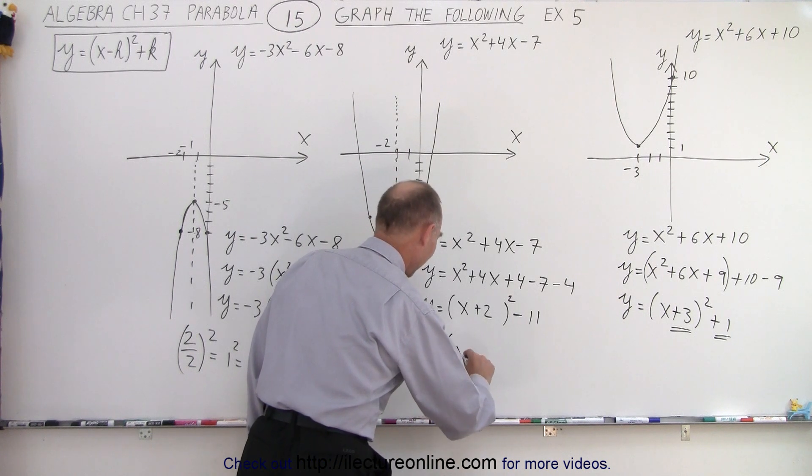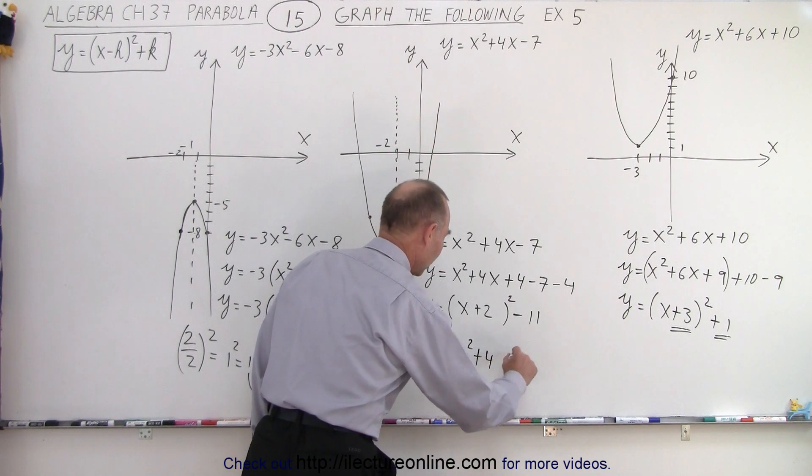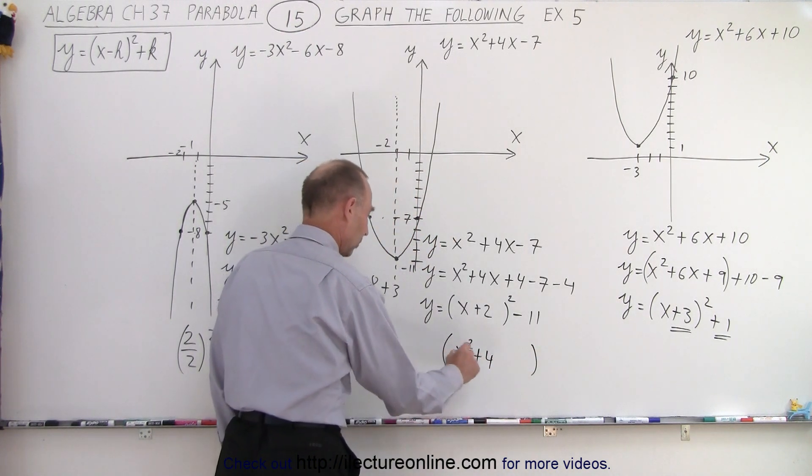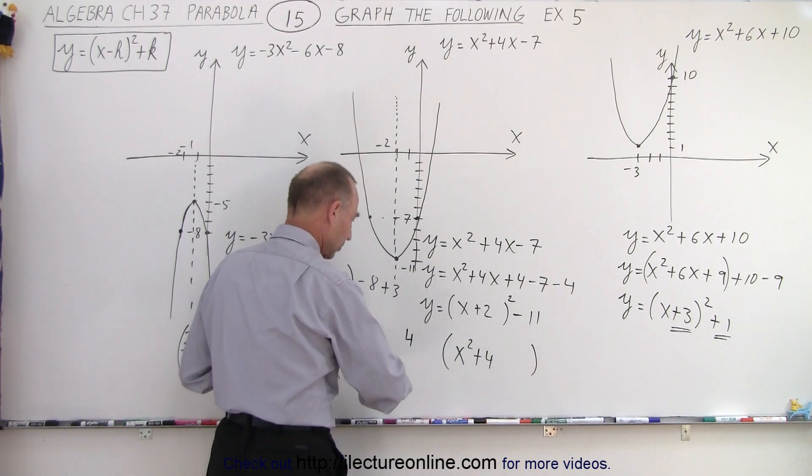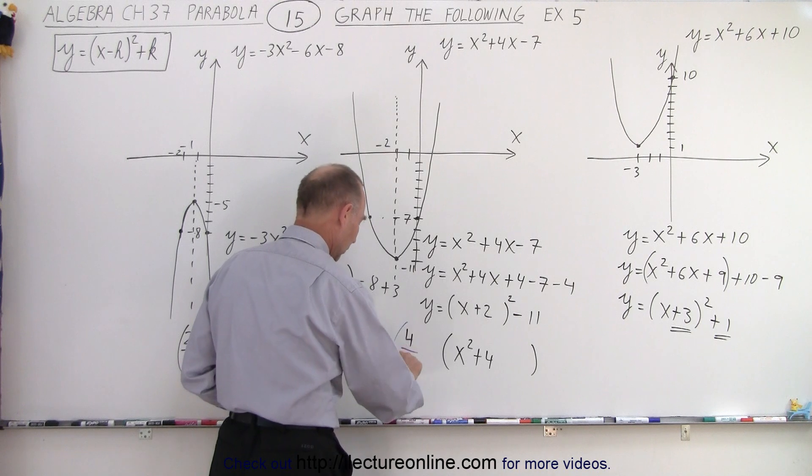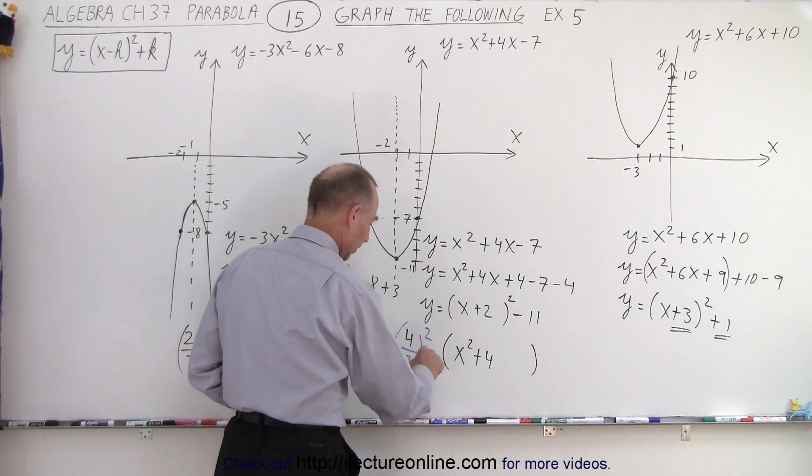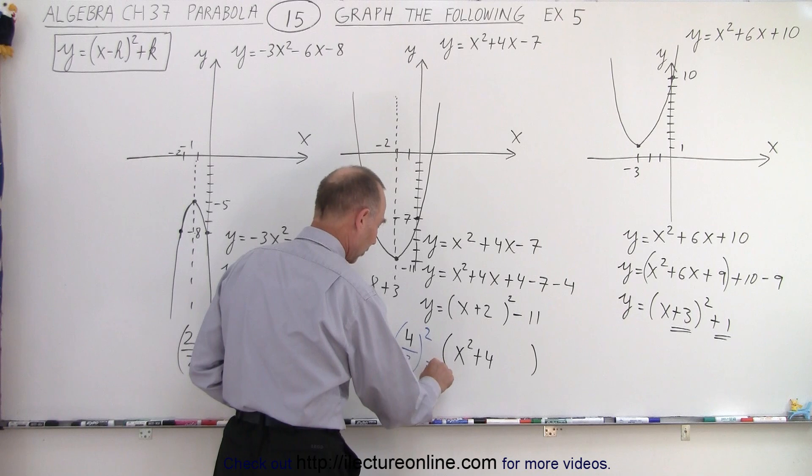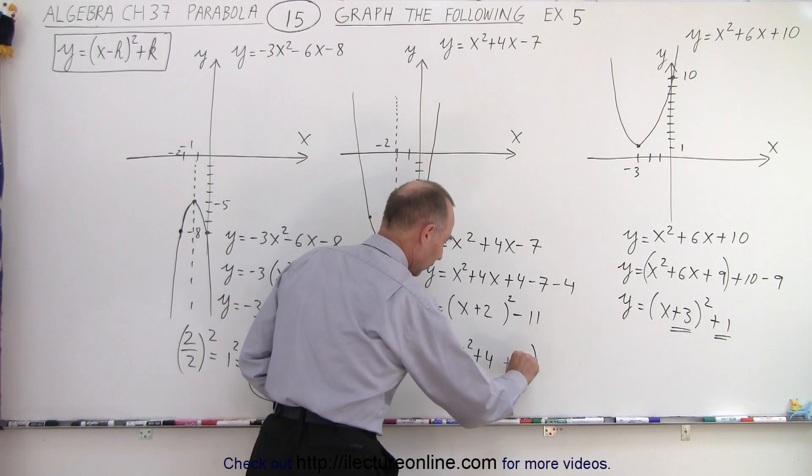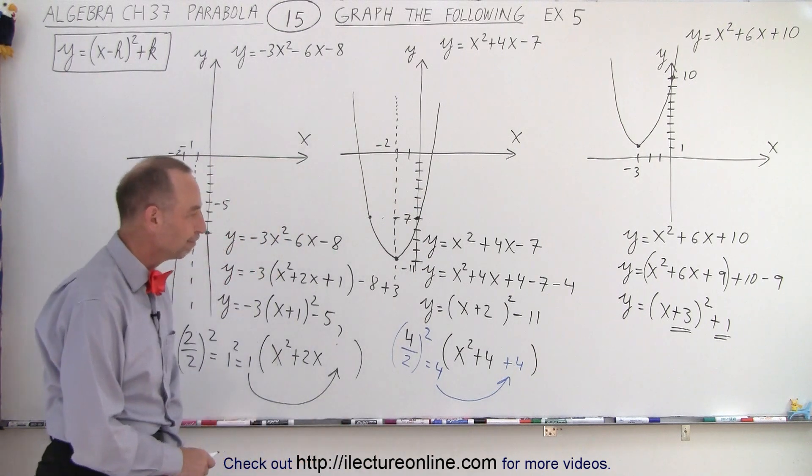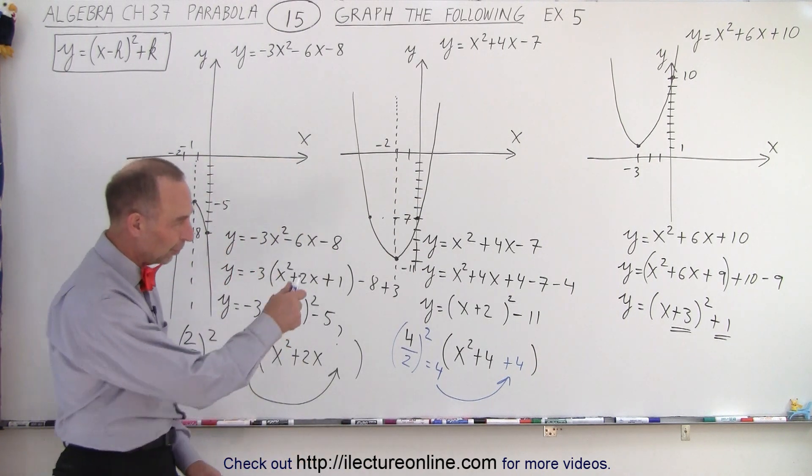So we have x squared plus 4x in the blank. So we take the number 4, we divide it by 2, and we square it. So that 4 divided by 2 is 2 squared, it gives me 4. That means we're going to add a 4 there. So that's where that came from.